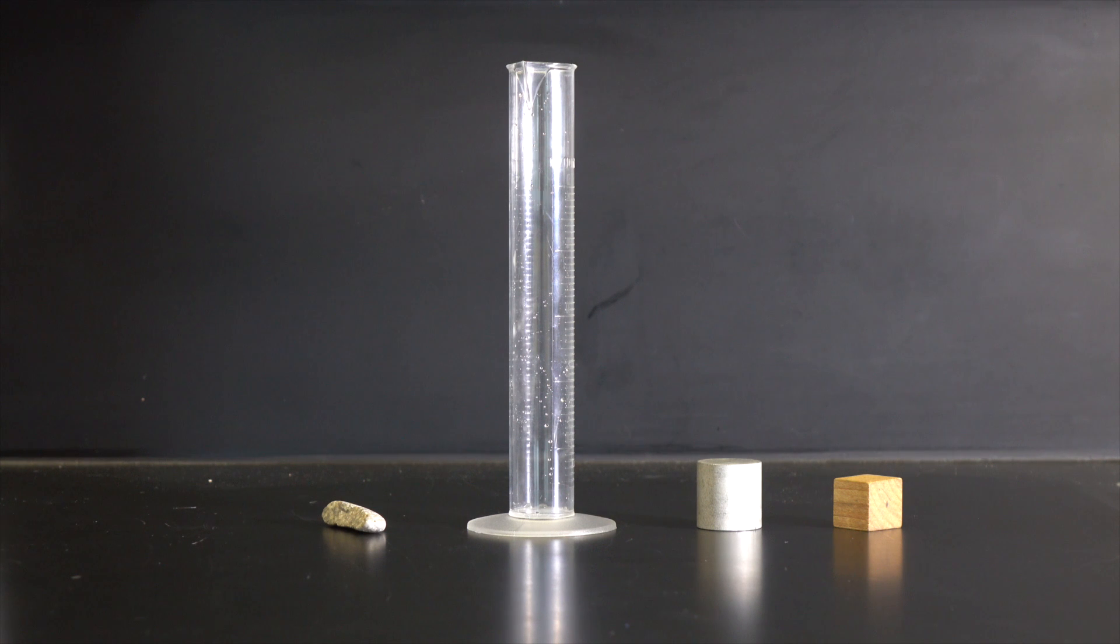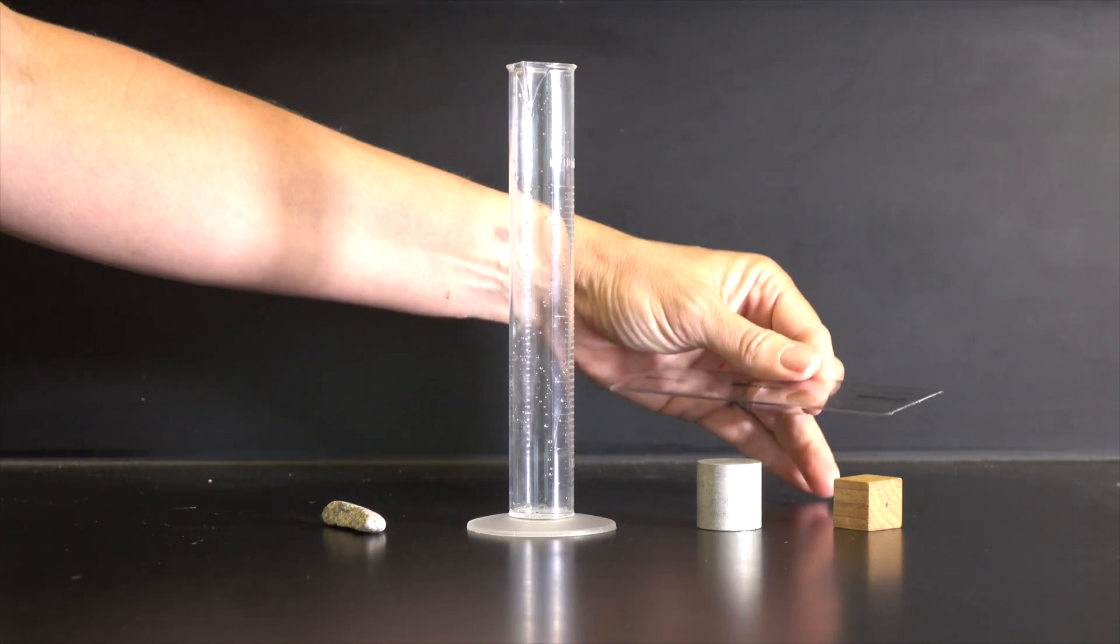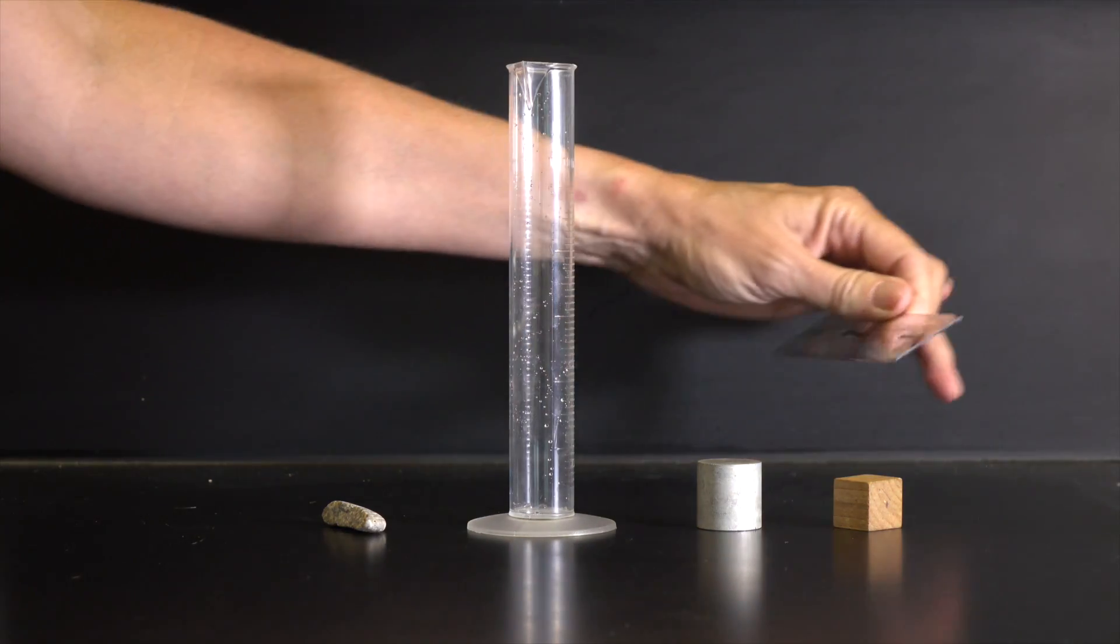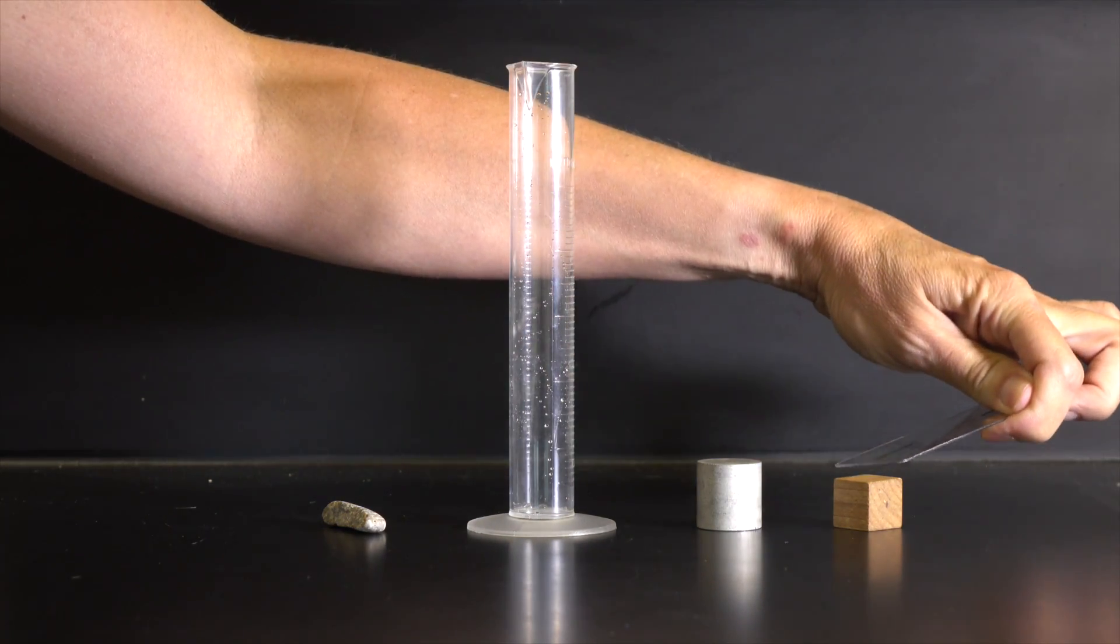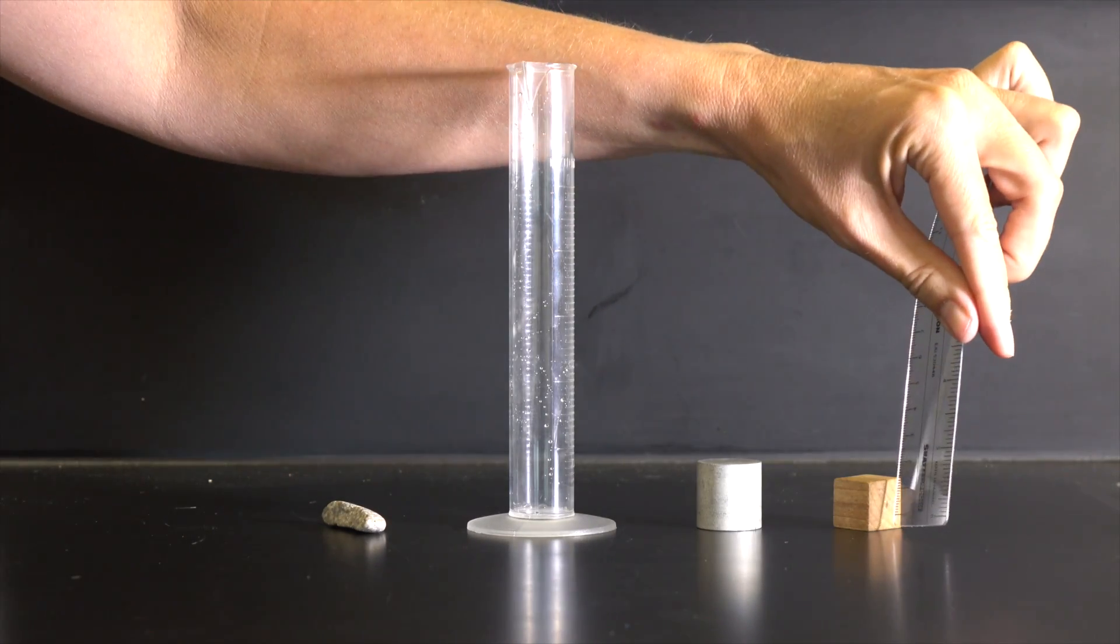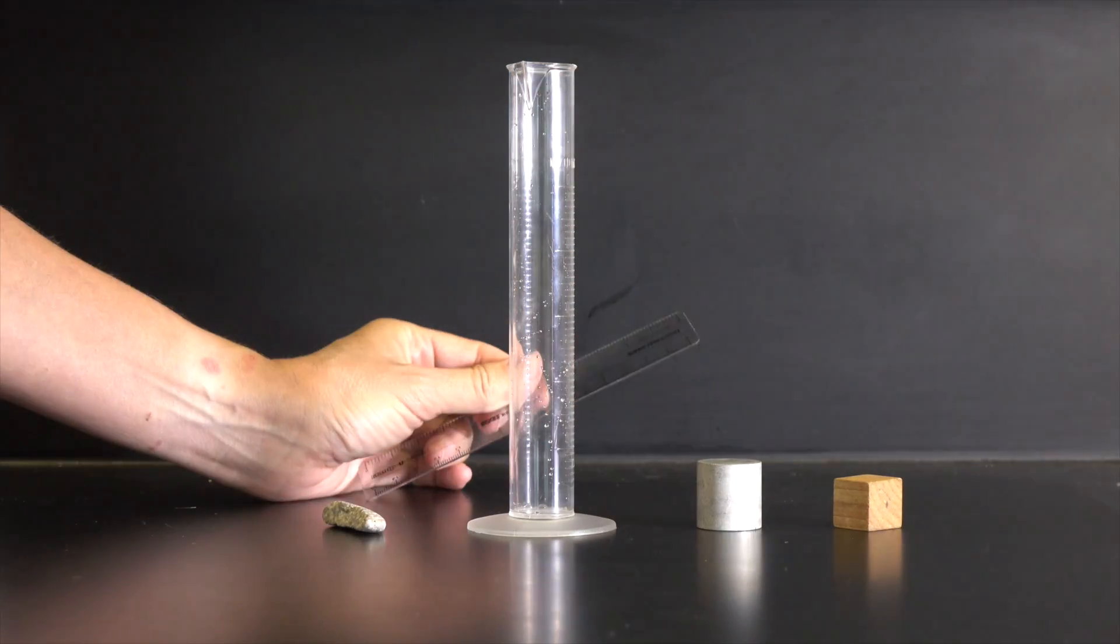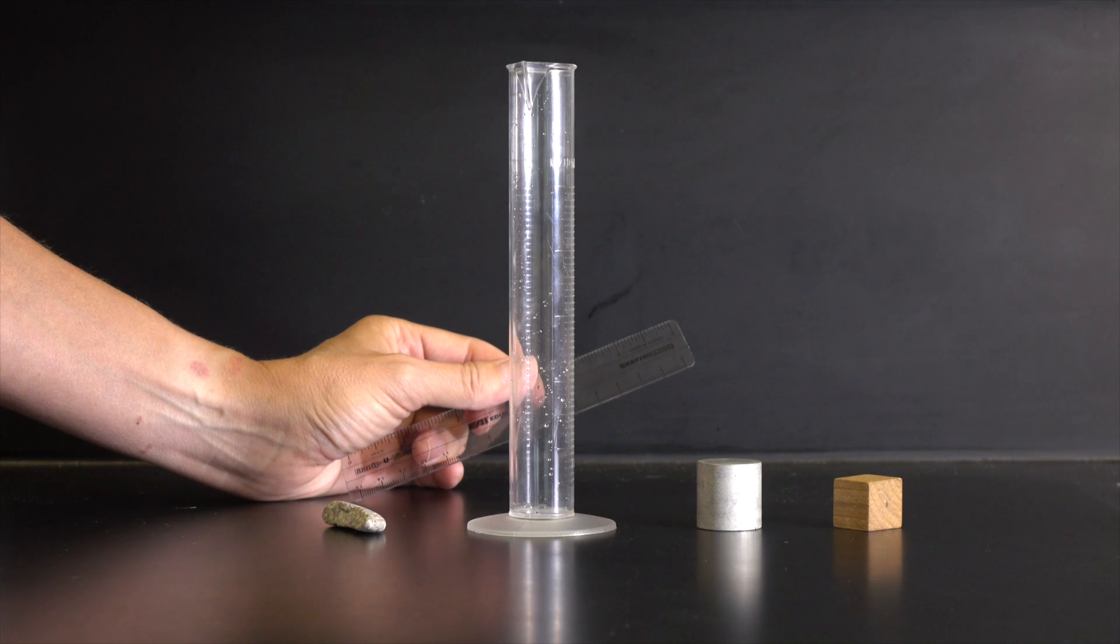You've learned in math class how to measure the volume of solids with regular shapes. For instance, you measure the length and multiply it by the width and the height of a rectangular solid to calculate its volume.